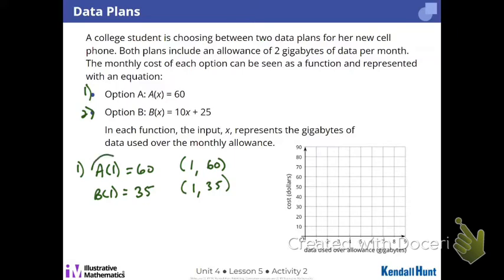Does everybody see that? Yes. So essentially, a of 1 is y, b of 1 is y, but they show that they're the two different y's for the two different functions. So I saw some a equals, b equals out there. That would be incorrect technically. It has to be a of 1. Or yeah, for this case, because this means 1 gig over the allowance.